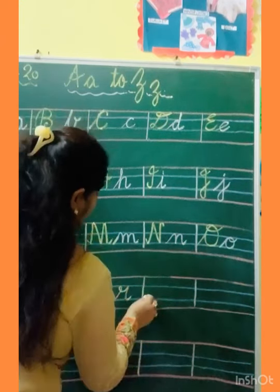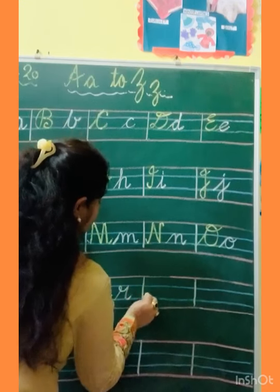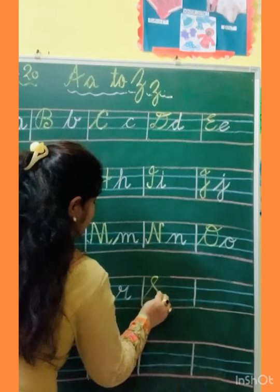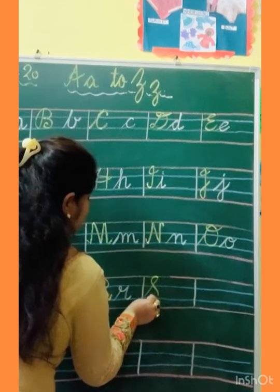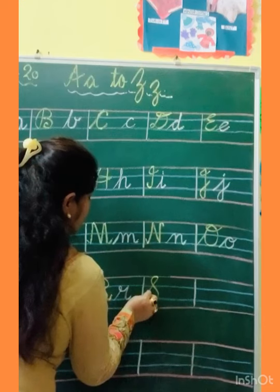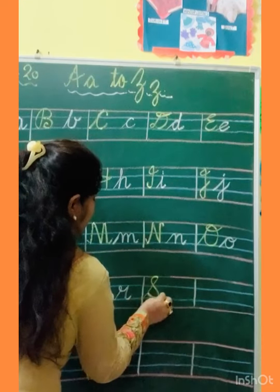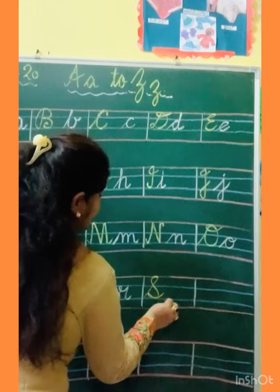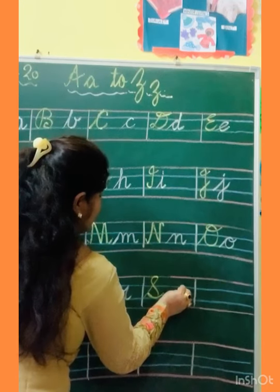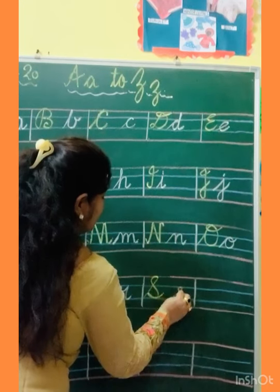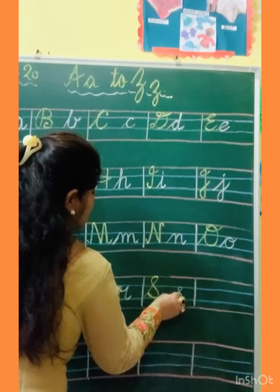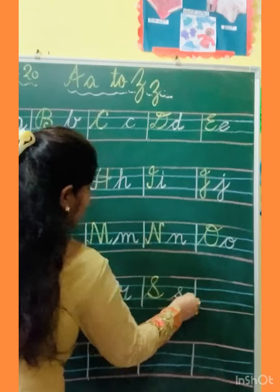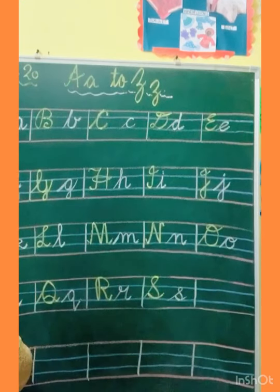Now S. Capital S: make slanting line, turn, make circle, touch the slanting line, and kick. And small S: slanting, turn, touch the slanting line, and kick. This is small S.